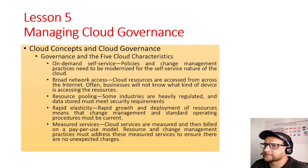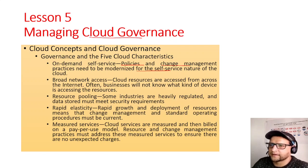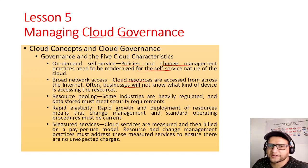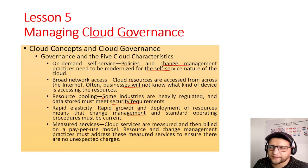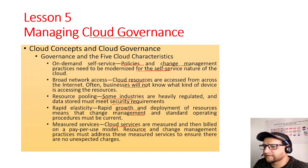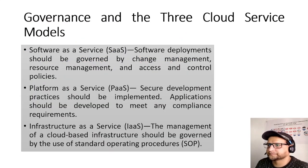Lesson 5 — Managing Cloud Governance. Connecting NIST characteristics to governance: On-demand self-service — policies and change management practices need to be modernized for the self-service nature of cloud. Broad network access — cloud resources are accessed from across the internet, and businesses may not know what kind of device is accessing them, hence zero trust models. Resource pooling — some industries are heavily regulated and data must meet security requirements like GDPR. Rapid velocity — rapid resource growth means change management and SOPs must be current. Measured services — cloud services are measured and billed on pay-per-use, so resource and change management must address these to avoid unexpected charges.